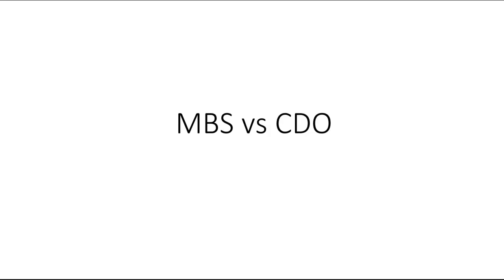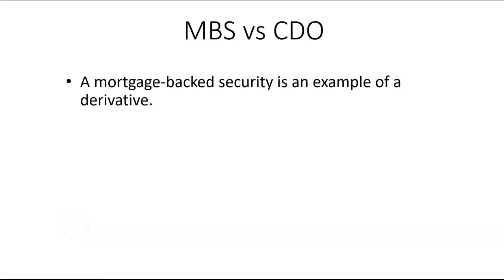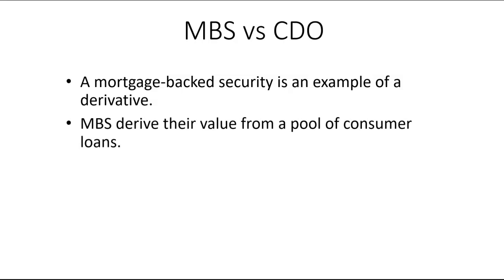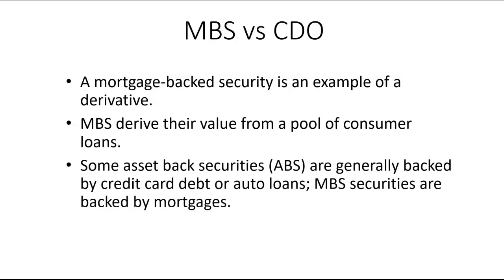A mortgage-backed security is an example of a class of financial assets called a derivative. A derivative is simply an asset that derives its value from another asset. Mortgage-backed securities, or MBSs, derive their value from a pool of customer loans. MBSs are a type of asset-backed security — some asset-backed securities are backed by credit card debt or auto loans, but MBSs are backed by mortgages.